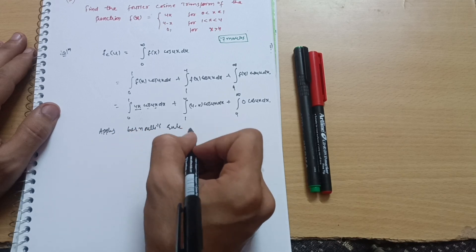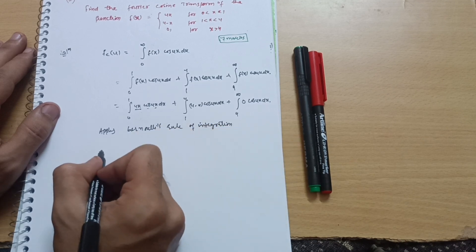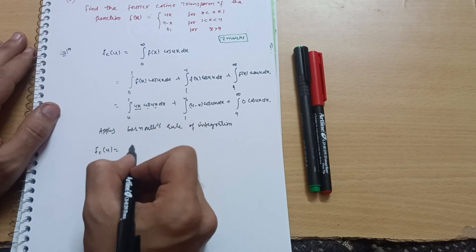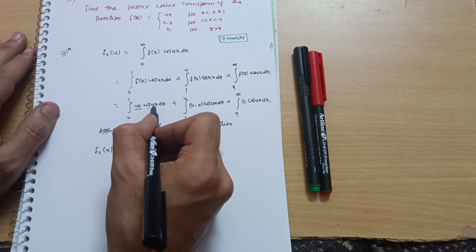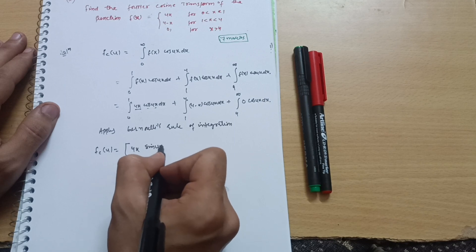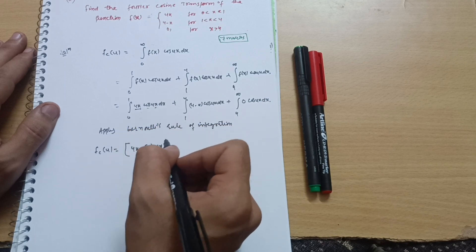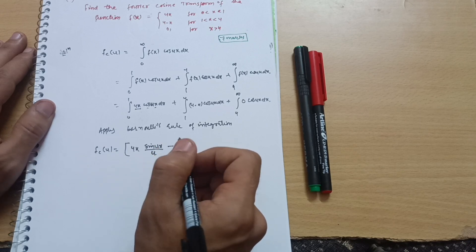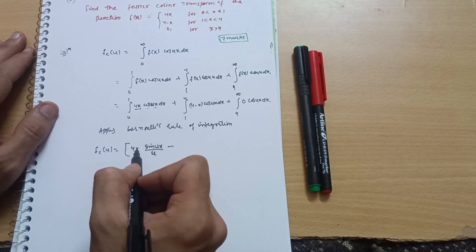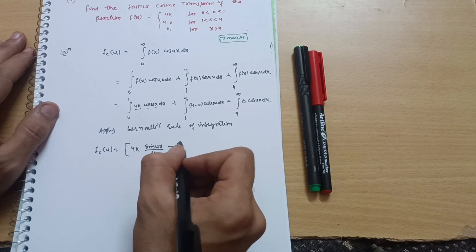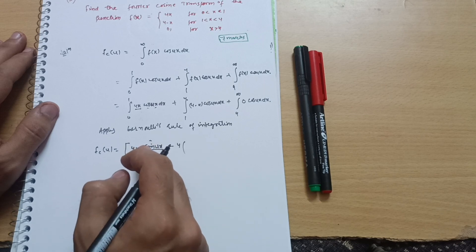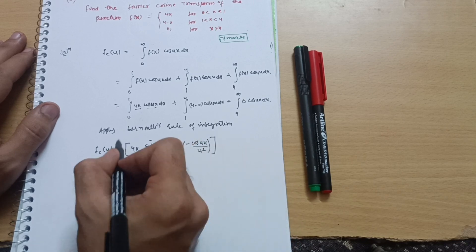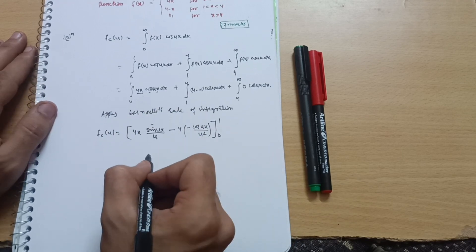Now apply Bernoulli's rule of integration (integration by parts). For the first integral, keeping 4x as the first function (u) and cos(ux) as the second function (v): the integral of cos(ux) is sin(ux)/u. So we get 4x · sin(ux)/u, then minus the differentiation of 4x — which is 4 — times the integral of sin(ux)/u, which is −cos(ux)/u². Limits go from 0 to 1. That completes the first term.